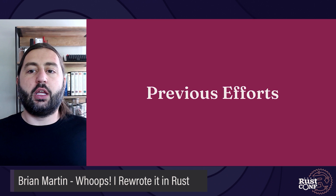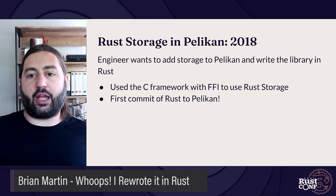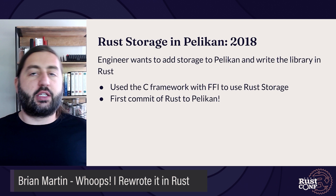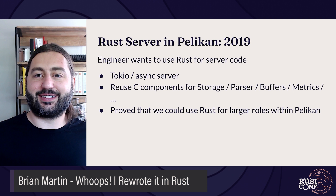There were some previous efforts that made me think this was going to be possible. Back in 2018, an engineer wanted to add a new storage library to Pelican and decided to try writing it in Rust. The idea was to use the core of Pelican and provide an FFI wrapper around the Rust storage library. This worked out pretty well — development was quick, and having a hybrid C and Rust server was workable. This became the first commit of Rust into Pelican.